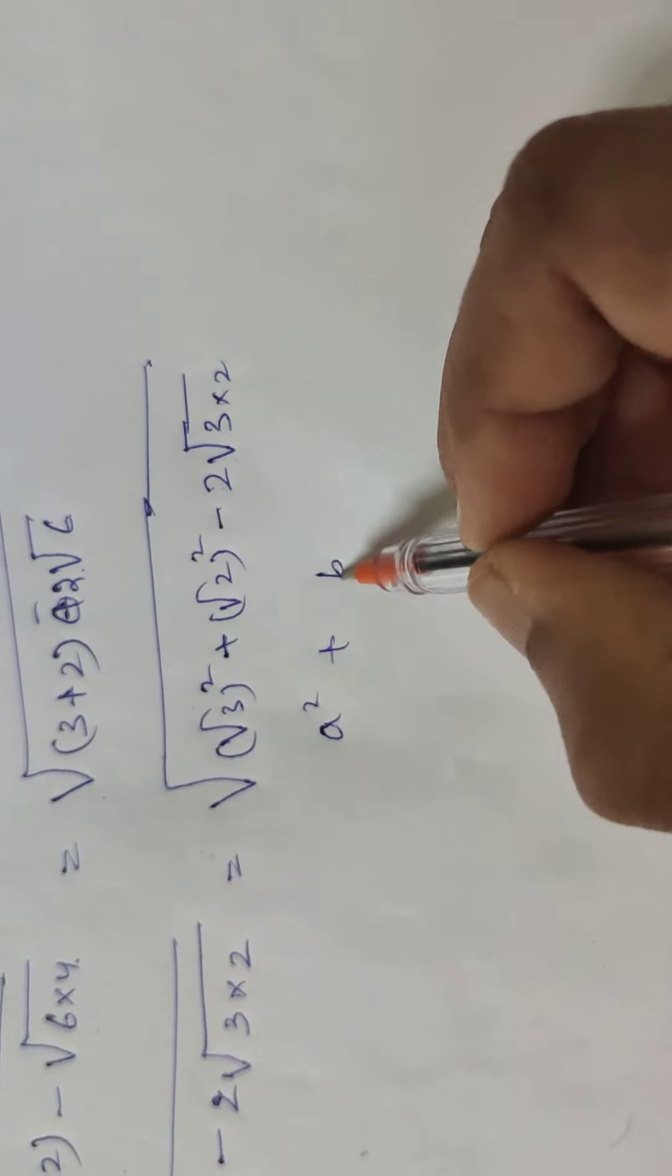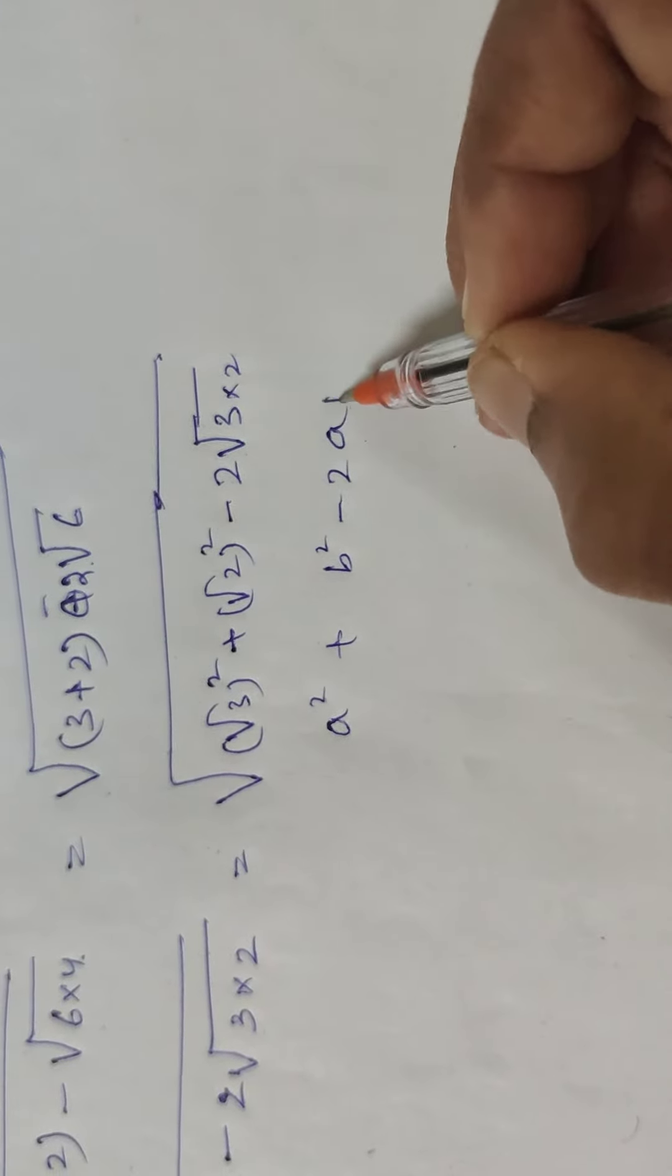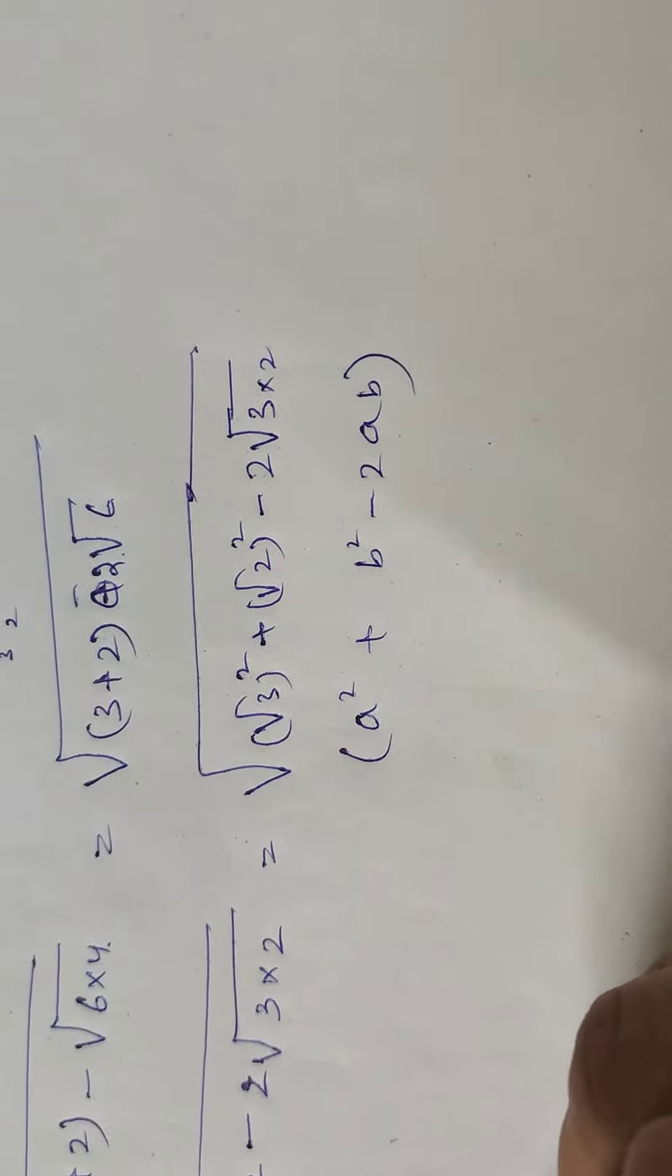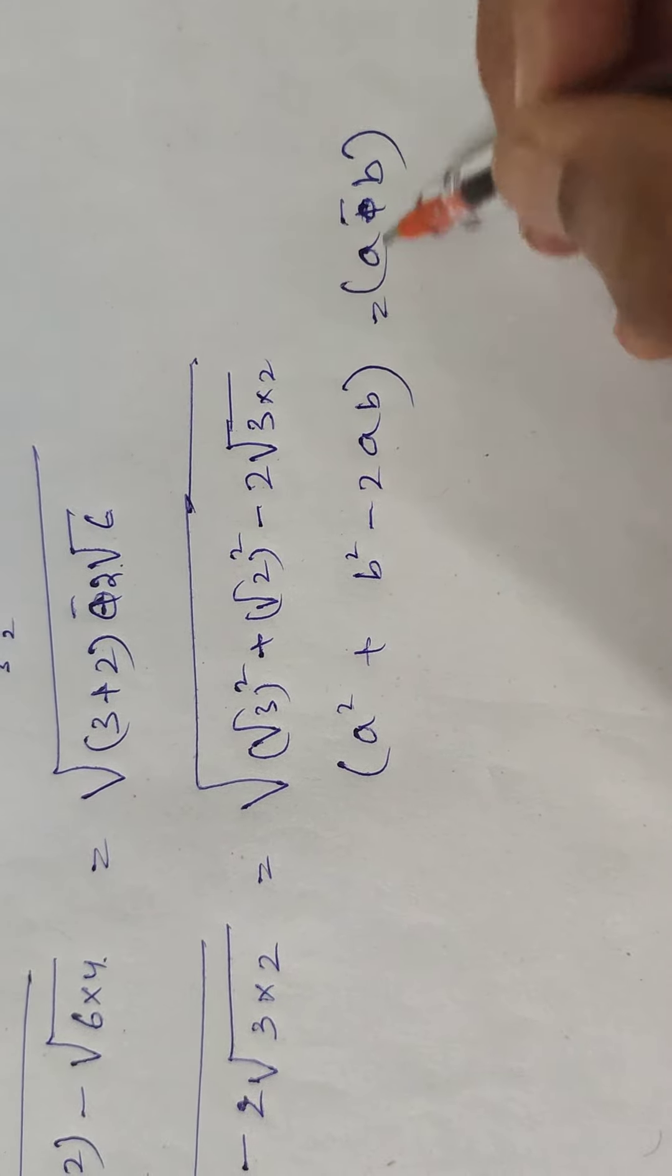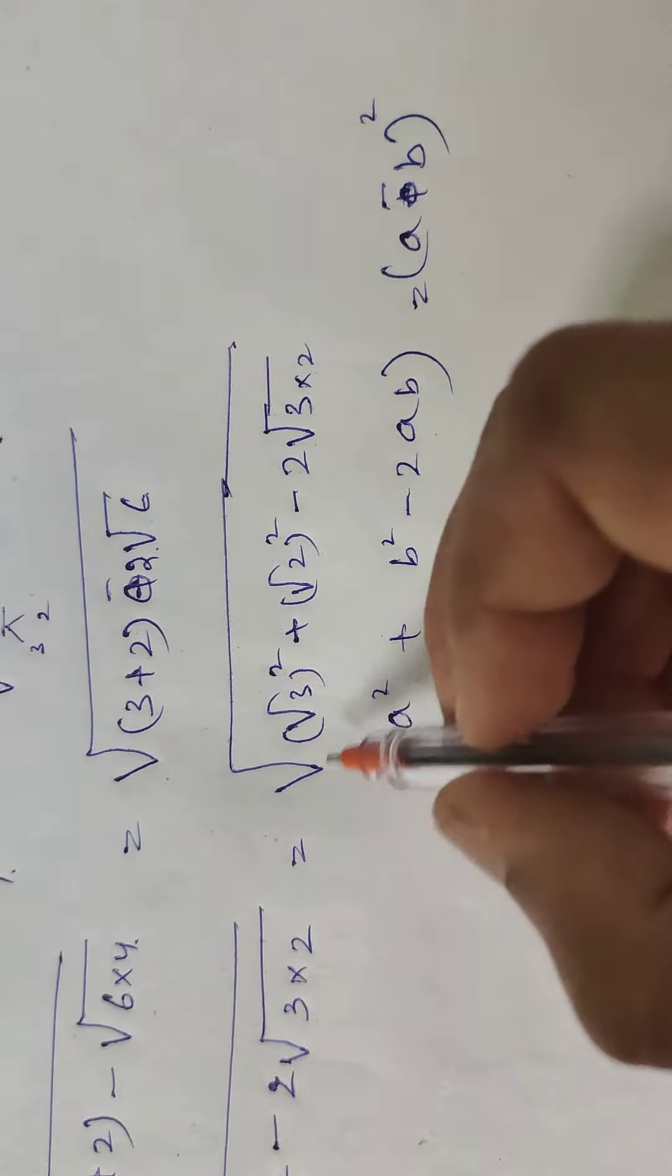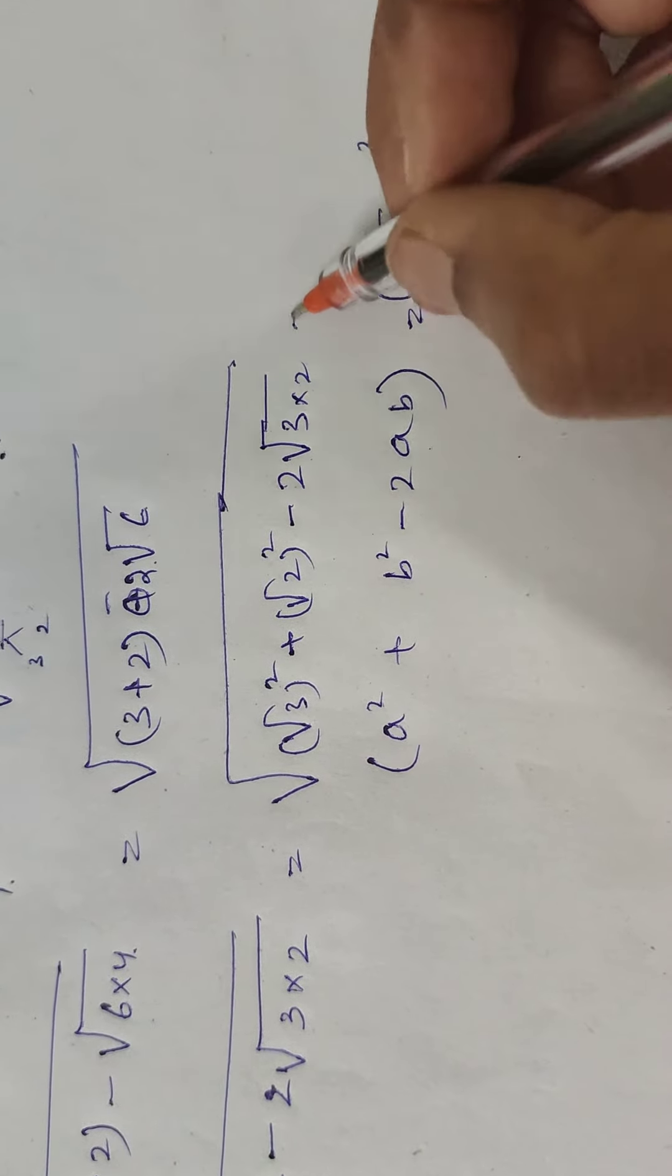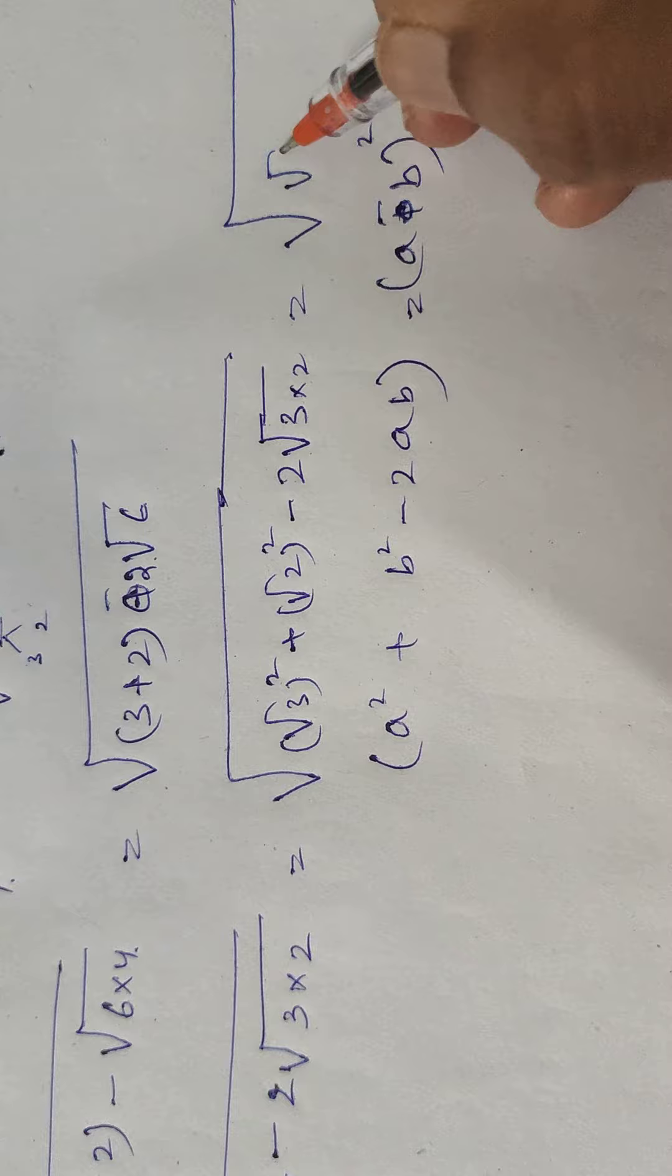Which is nothing but a plus b... sorry, there is a minus, so a minus b whole square. So now I'm going to rewrite this as under root of root 3 minus root 2 whole square.